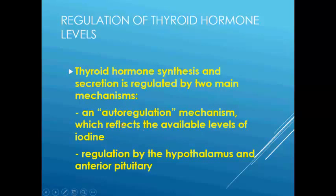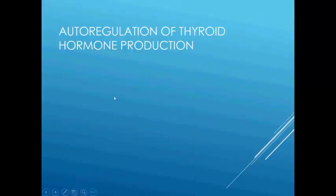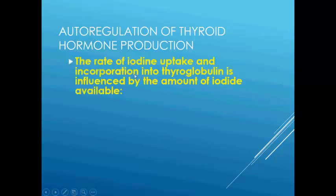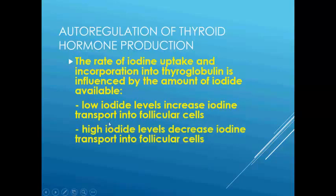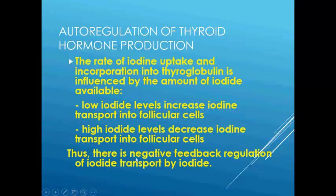In the autoregulation mechanism, it reflects the available level of iodine, whereas regulation by the hypothalamus and anterior lobe of the pituitary also takes place. The rate of iodine uptake and incorporation into thyroglobulin is influenced by the normal amount of iodine available. Low iodine level increases iodine transport into the follicular cells, whereas high iodine level decreases iodine transport into the follicular cells. Thus, there is a negative feedback regulation of iodine transport by iodide.